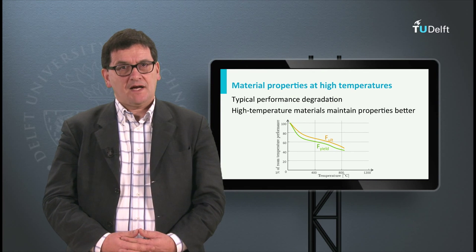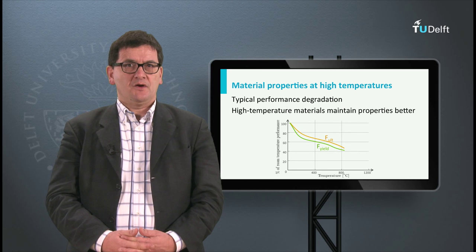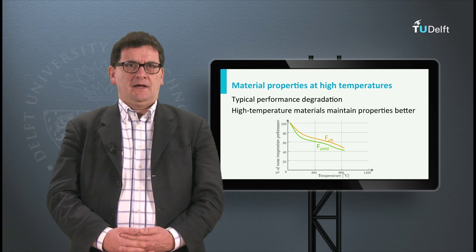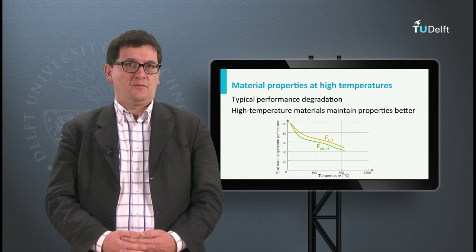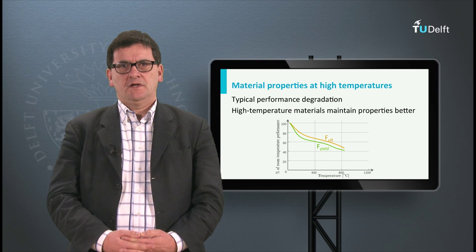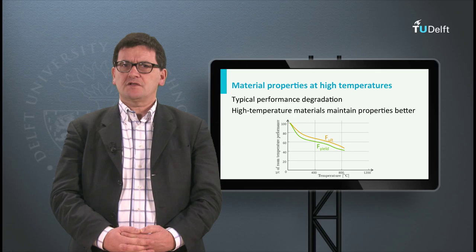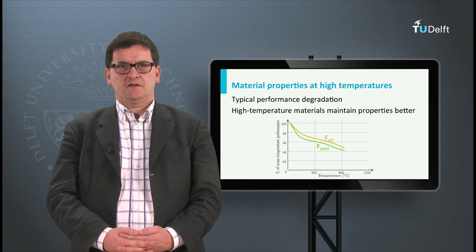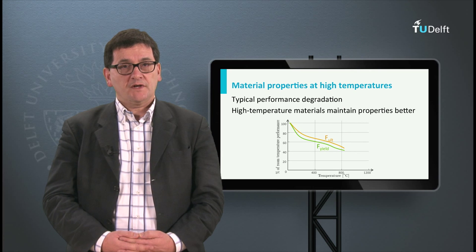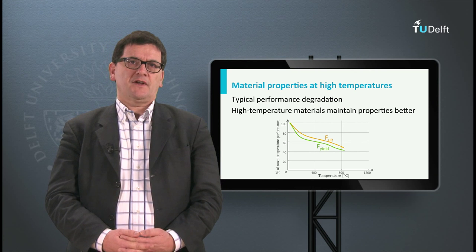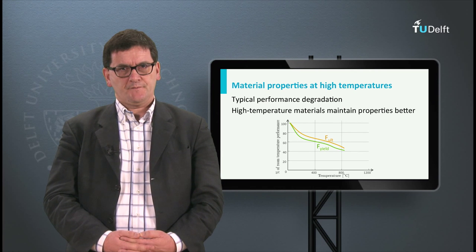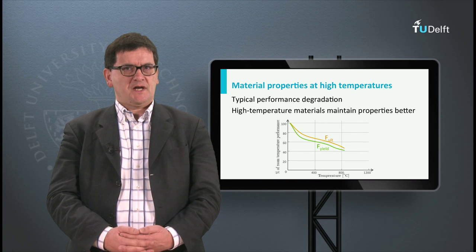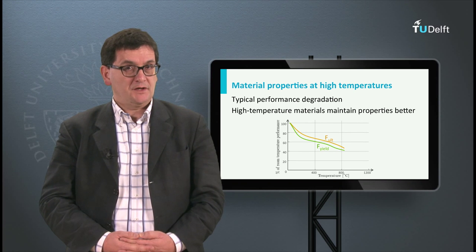At high airspeeds, high temperatures may occur due to friction, and high temperature has a negative impact on the performance of most materials. Aluminium alloys can be used up to temperatures of 100 to 120 degrees Celsius. Beyond 150 degrees most strength values drop very rapidly. Most composites also cannot sustain temperatures higher than 150 to 200 degrees Celsius.